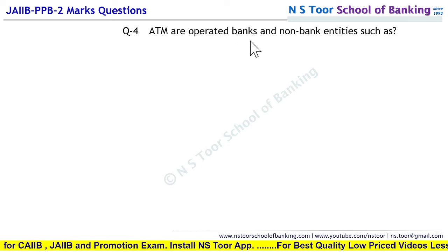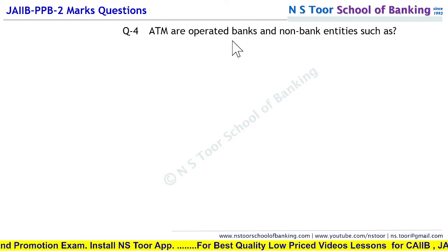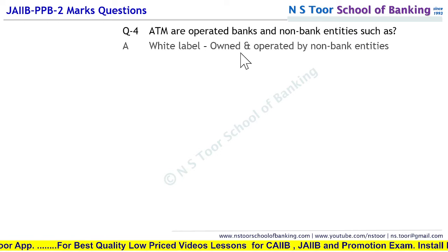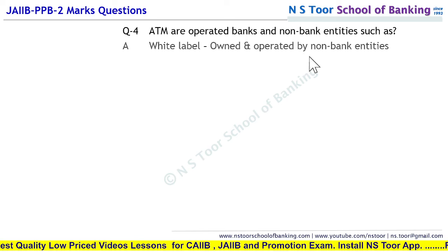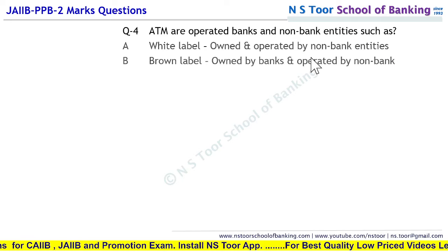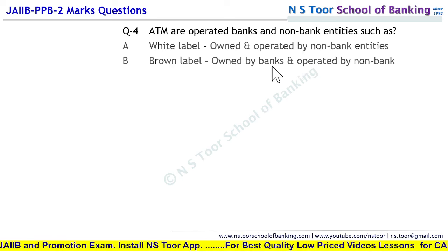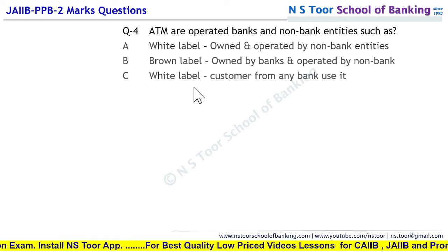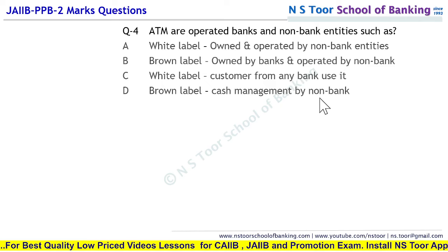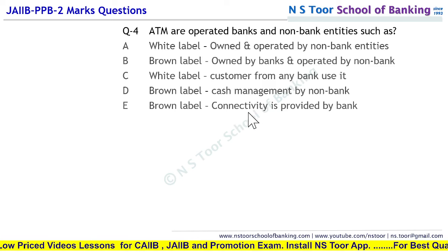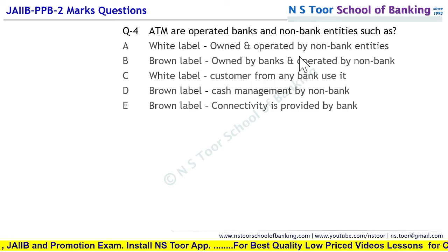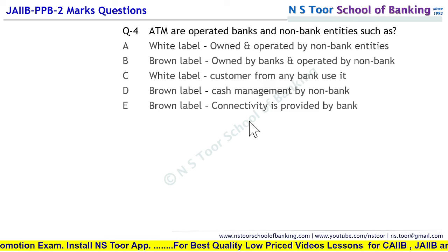Question number 4: ATMs are operated by banks and non-bank entities. White label — owned and operated by non-bank entities, normally non-bank finance companies. Brown label — owned by banks but operated by non-bank entities. White label — customer from any bank can use it. Brown label — cash management is done by non-bank. Brown label — connectivity is provided by bank. Ye white label aur brown label ke features hain, in features mein se humne answer pick up karna hoga.